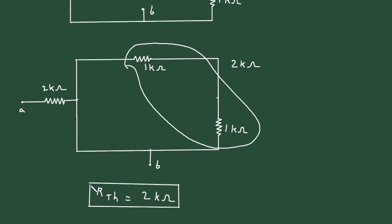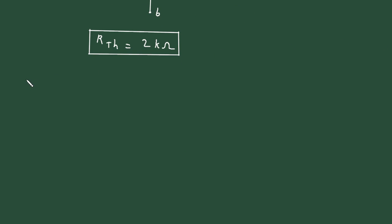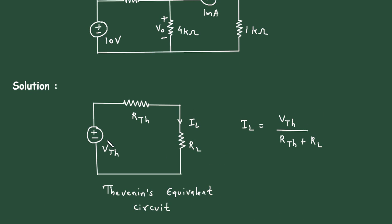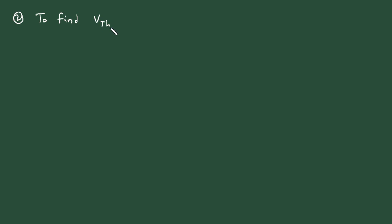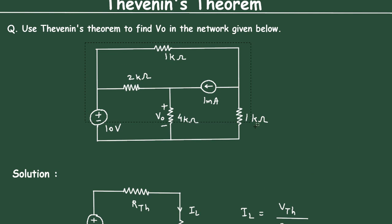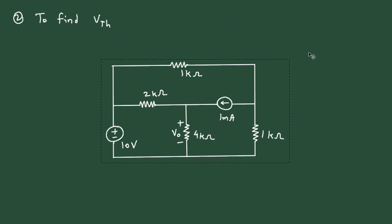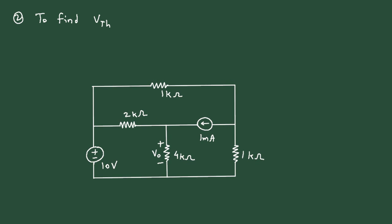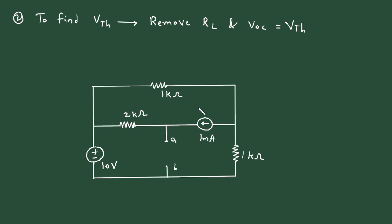Now we have the value of Rth. Next we have to find the value of Vth, that is Thevenin's voltage. To find Vth, again we will remove RL. Terminal A and terminal B are identified, and VOC is equal to Vth. So this will be our open circuit voltage VOC, and we will find the value of this VOC.